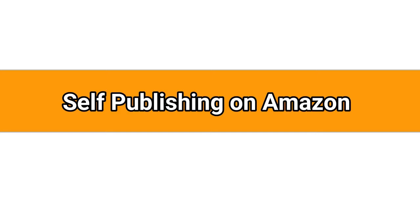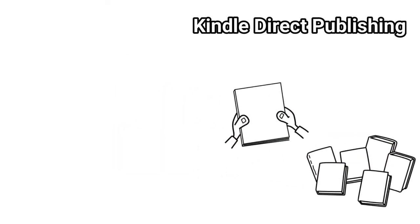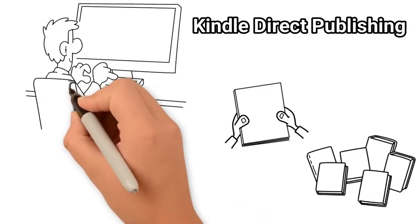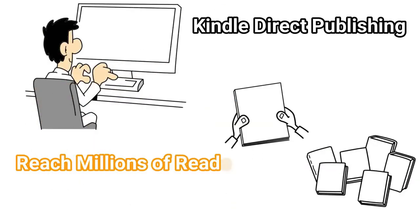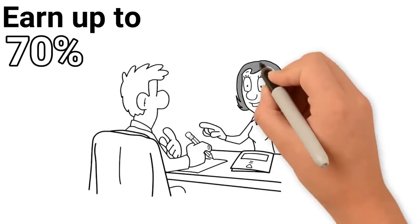Number nine: self-publishing on Amazon. Self-publishing paperbacks and ebooks with Kindle Direct Publishing is fast and free. Your book could reach millions of readers on Amazon and Kindle stores worldwide in 24 hours. You can earn up to 70% royalties for each book sold.